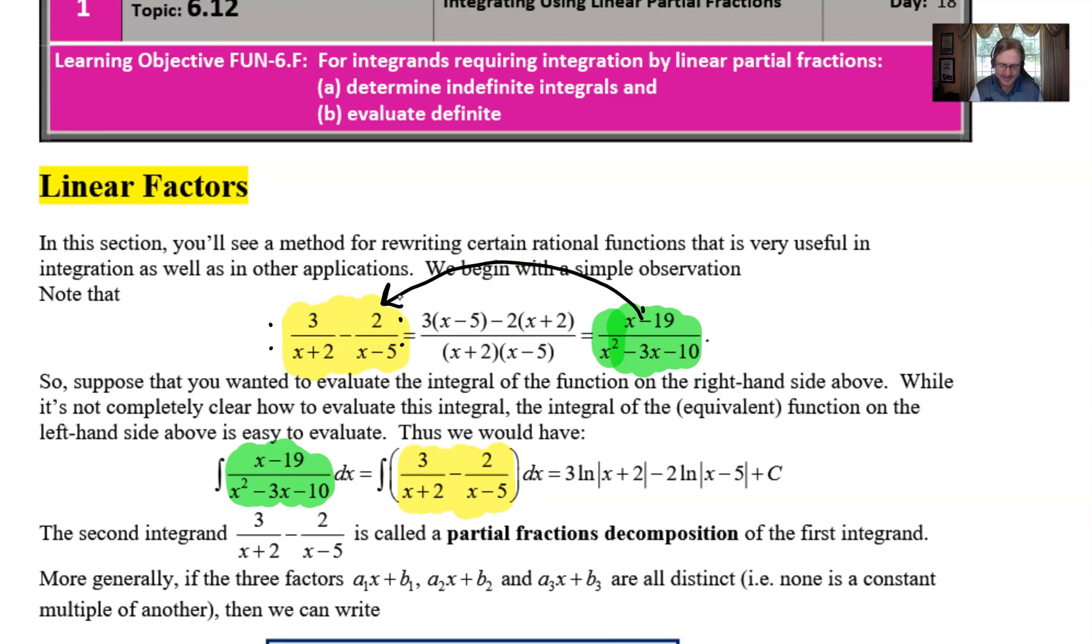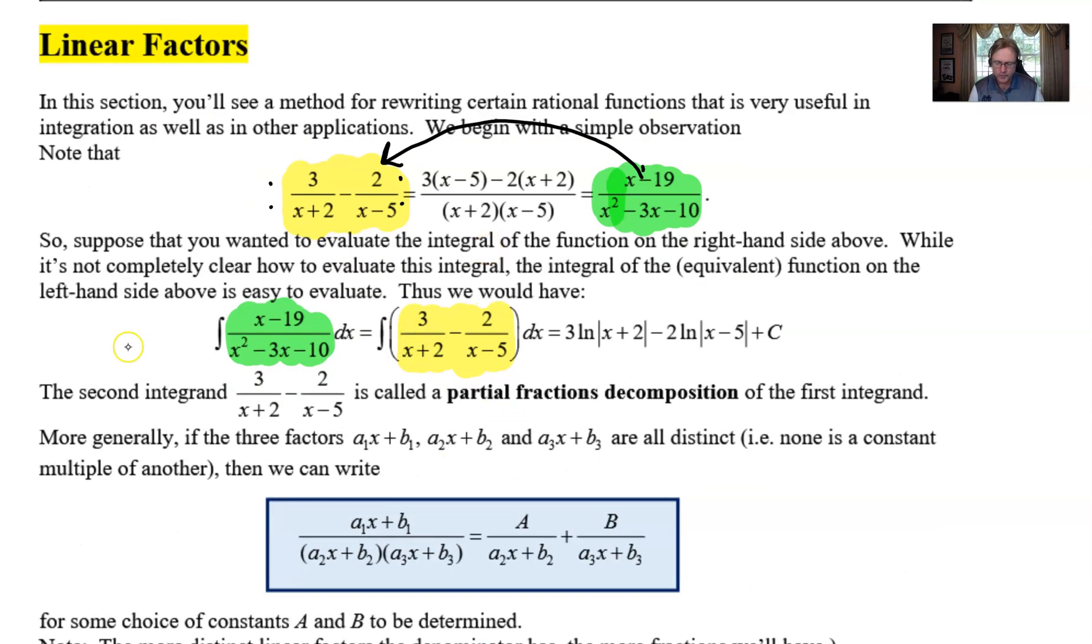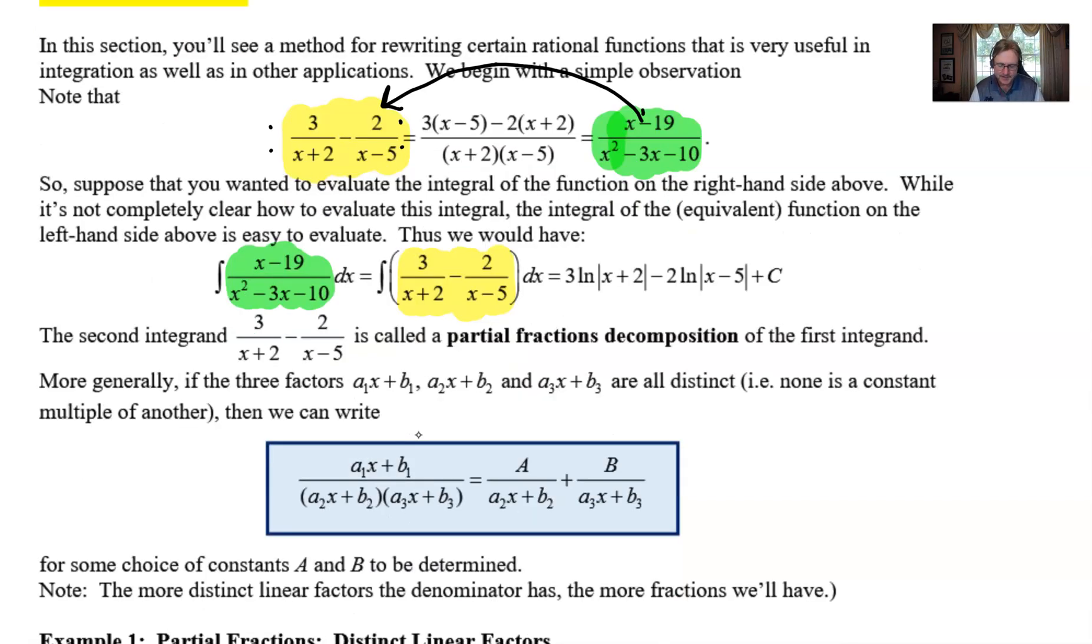The grand question is how do we move backwards? How do you undo the common denominator and move backwards? That's what partial fraction decomposition is all about. The individual fractions that we've indicated here are called partial fractions, and we will always set them up in a very similar process according to this blue box.